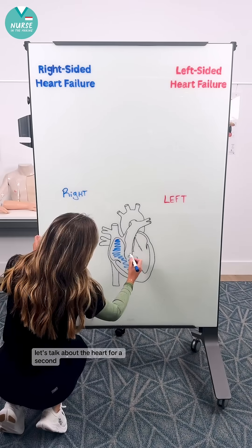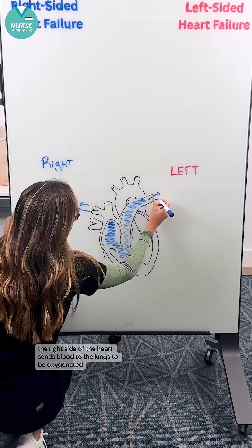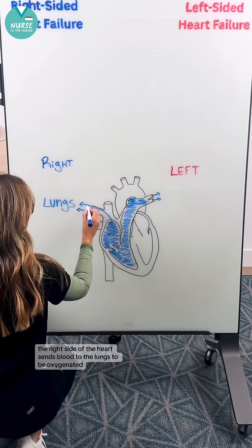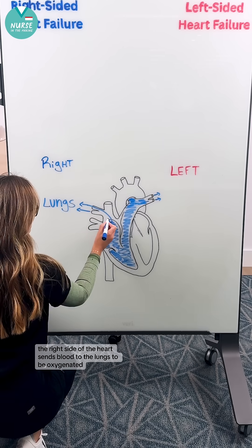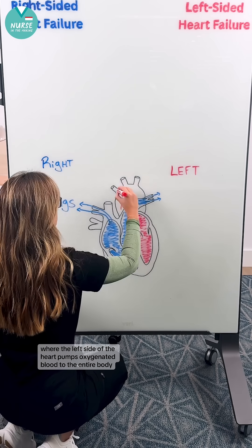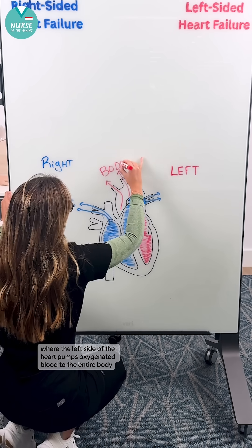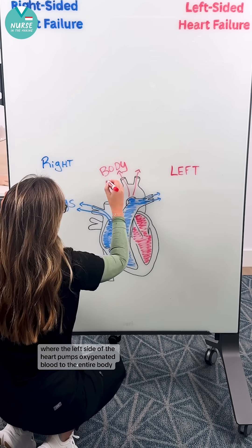Let's talk about the heart for a second. The right side of the heart sends blood to the lungs to be oxygenated, while the left side of the heart pumps oxygenated blood to the entire body.